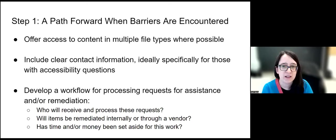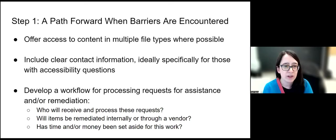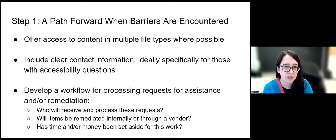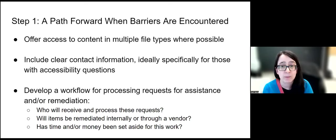It's really important to offer access to content in multiple file types where possible. Often we receive materials in a particular file type and then make them all into PDFs, but without a lot of accessibility remediation, PDFs may not be accessible to people using specific types of assistive technology. It's useful to try to offer content in multiple different file types so that if someone finds their assistive technology works best with a particular document type, or if accessibility features only appear in one version, you're still maintaining all of that.